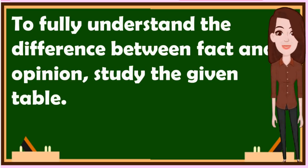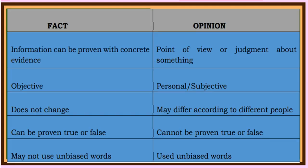To fully understand the difference between fact and opinion, study the given table. The first column is fact and the other one is opinion. Under fact: information can be proven with concrete evidence. Under opinion: point of view or judgment about something. Fact is objective; opinion is personal or subjective. Under fact: does not change. Opinion may differ according to different people. Under fact: can be proven true or false. Opinion cannot be proven true or false. Under fact: may not use biased words. Under opinion: uses biased words.